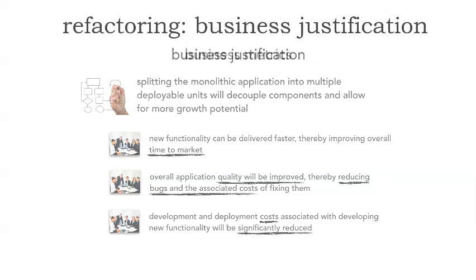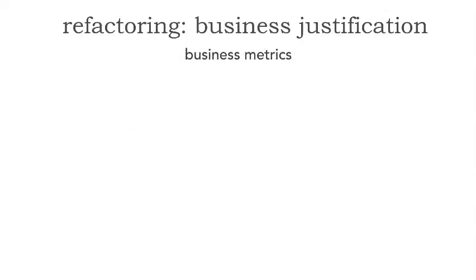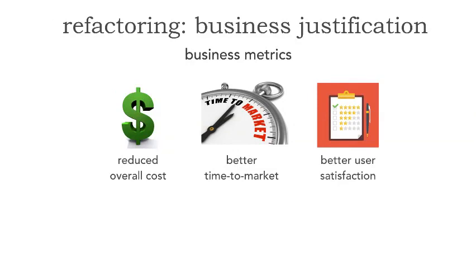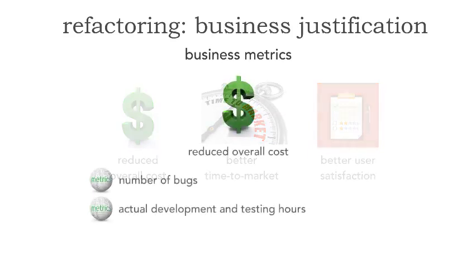When we go to justify business value, we can usually rely on three kinds of metrics: reducing overall cost, better time to market, and better user satisfaction. But here's the trick as an effective software architect — we can't just do lip service and say 'we'll reduce all this.' We have to be able to accurately measure this and demonstrate that we did, in fact, reduce cost. Let's take a look at each of these.